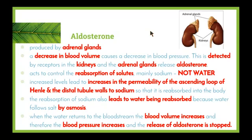Increased levels of aldosterone in the blood leads to increased permeability of the ascending loop of Henle and the distal tubule walls to sodium, so that it can be reabsorbed into the body. The reabsorption of sodium also leads to water being reabsorbed because water follows salt by osmosis. If salt moves out of the kidney tubule into the blood vessels, there is a much higher level of water in the nephron than in the capillary, so water moves from the nephron into the capillary — high to low water concentration. When water returns to the bloodstream, blood volume and blood pressure increase, and the release of aldosterone is stopped.